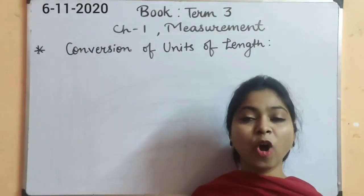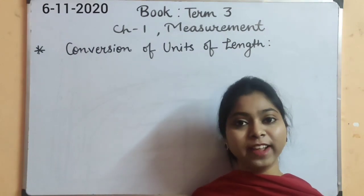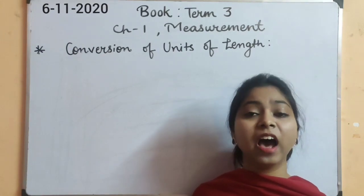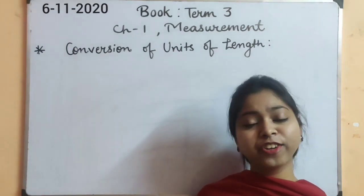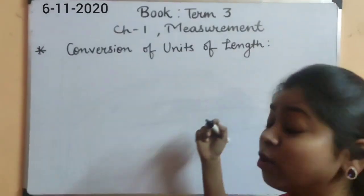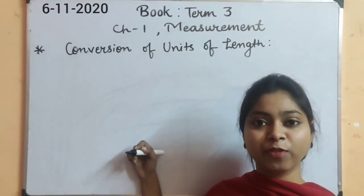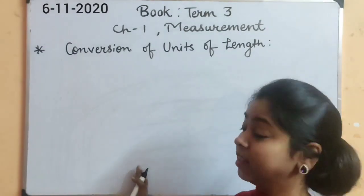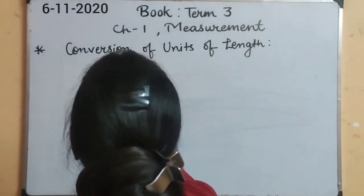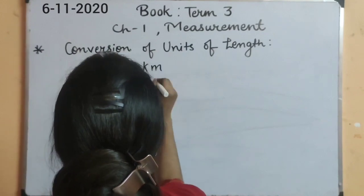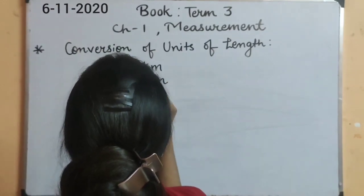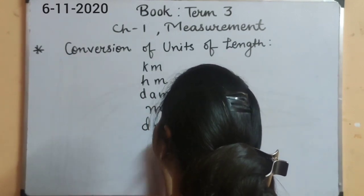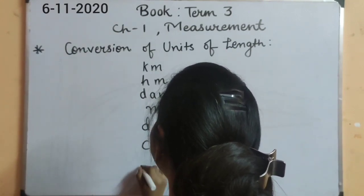So here our topic begins, conversion of units of length. Let's write all the units of length and learn how to convert from one unit to another. The basic or standard unit of length is meter. So let's write meter with all the units: kilometer, hectometer, decameter, then the basic unit is meter only, then decimeter, centimeter and millimeter.